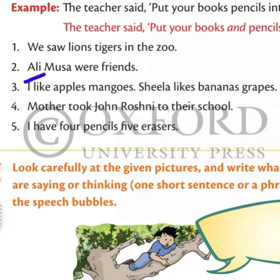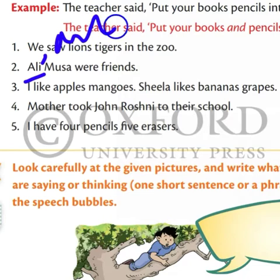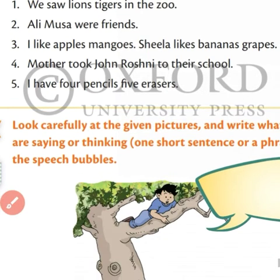Ali is a name, Musa is also a name — both are names. So between these two names we have to use 'and': Ali and Musa were friends. 'And' is used to join the words. See number three: I like apples, mangoes.